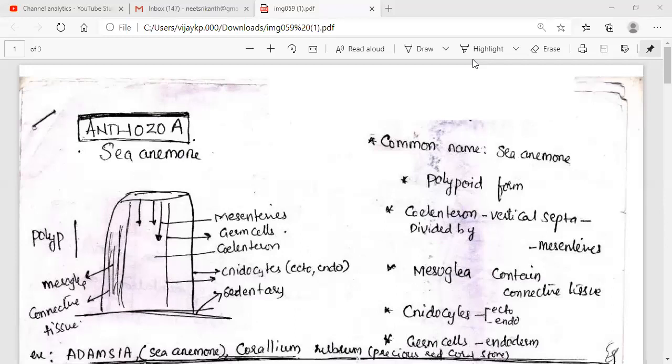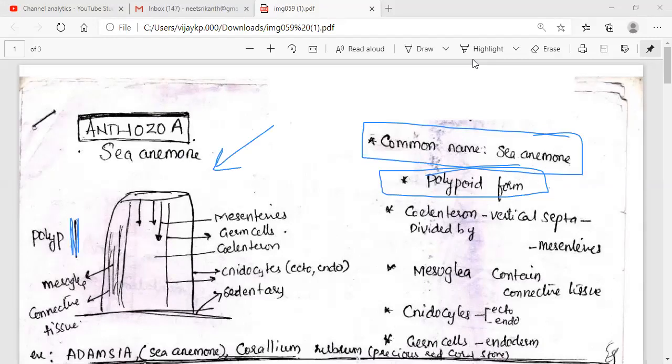The Anthozoans, which the common name is sea anemone, we call them sea anemone. They are polyp forms. They are sea anemone, they are polyp forms and now here onwards, they are polyps. By looking toward the diagram, you can say they are polyp forms. Here I made a symbol, so by looking toward the diagram you need to say they are polyp forms.